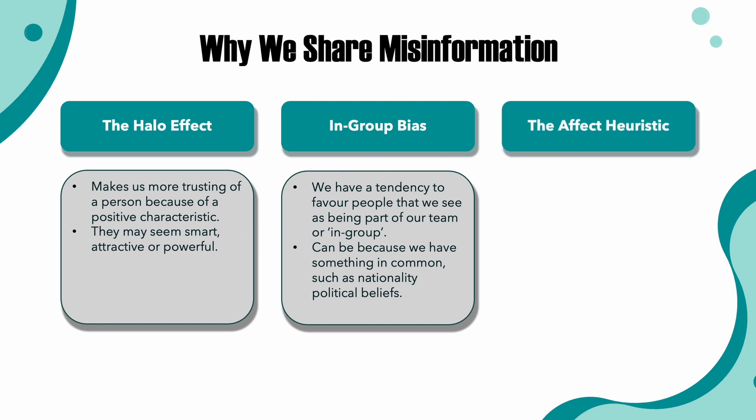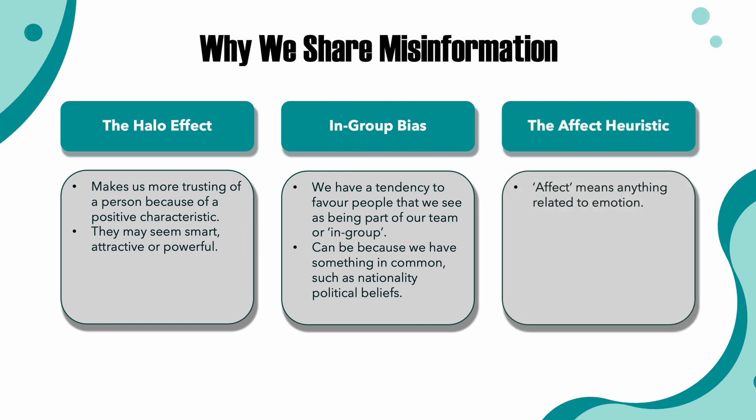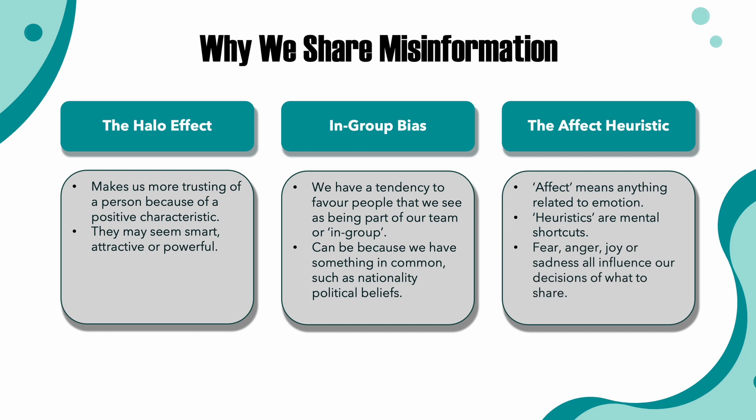Three: the affect heuristic. The word 'affect' in psychology means anything related to emotion, and heuristics are mental shortcuts that our brains take when processing information. So the affect heuristic is our brain's way of making quick decisions based on emotion. It's no secret that a lot of misinformation on the internet evokes fear, and it can really impact a person's behavior if they feel like they can do something to avoid being harmed. But we also have a tendency to share information that evokes other emotions, such as anger, joy, or sadness.